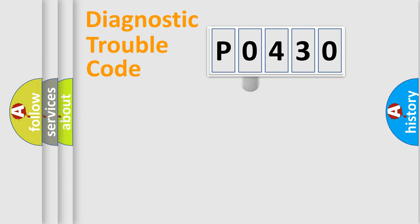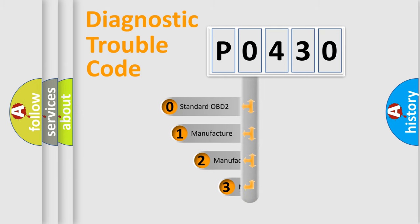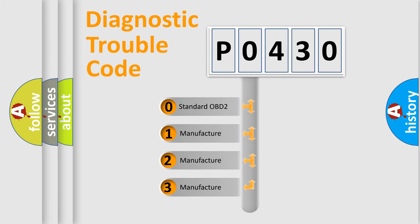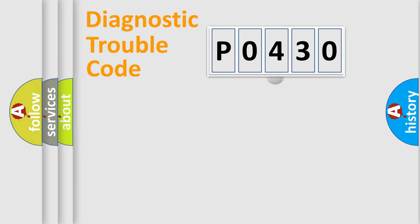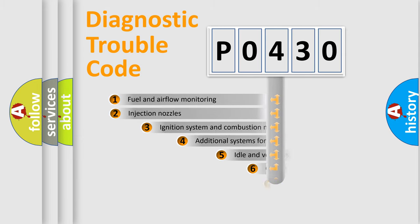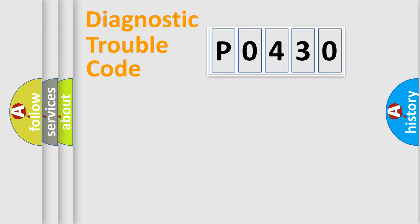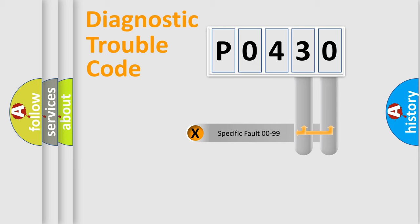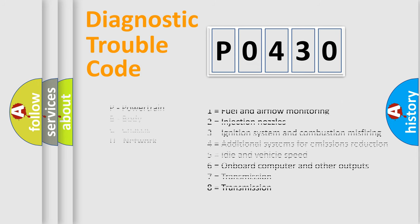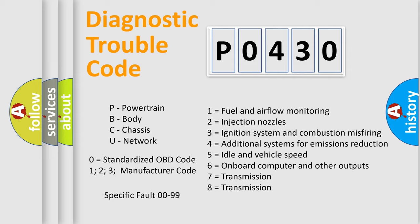This distribution is defined in the first character of the code. If the second character is expressed as zero, it is a standardized error. In the case of numbers 1, 2, or 3, it is a more specific expression of the car-specific error. The third character specifies a subset of errors. This distribution is valid only for the standardized DTC code, and only the last two characters define the specific fault of the group.